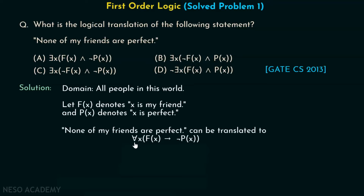Here, the universal quantifier comes into picture because we are talking about all the people in this world. That is why implication is required — I have to select my friends. So, if x is my friend, then x is not perfect. That is what this statement means: for all people in this world, if x is my friend, then x is not perfect.